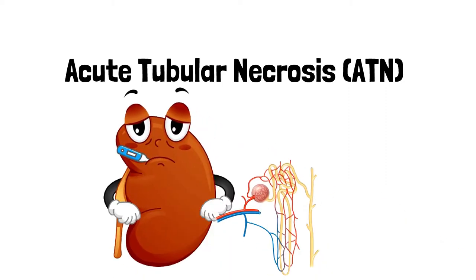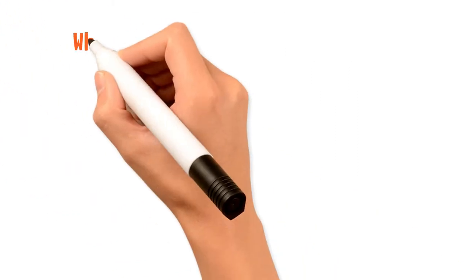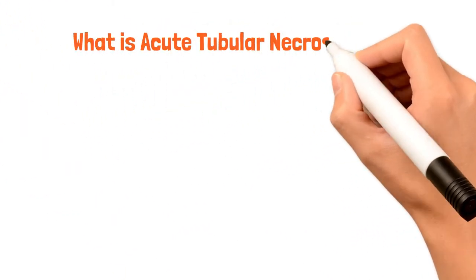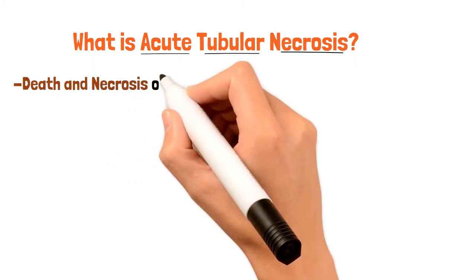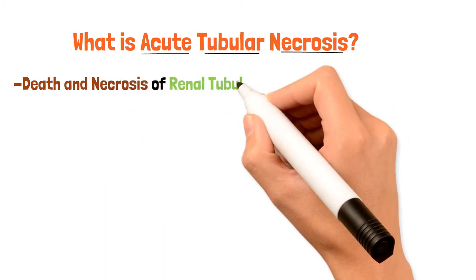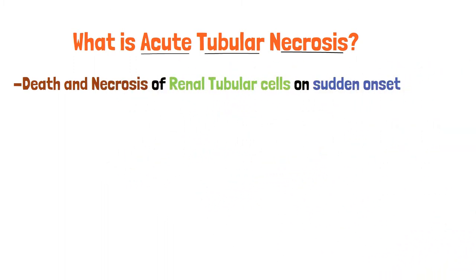What is acute tubular necrosis? Acute means it happens suddenly, tubular means it involves the renal tubular cells, and necrosis means cell death and cell injury. So the death and necrosis of renal tubular cells on sudden onset is called acute tubular necrosis.